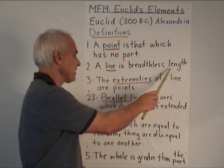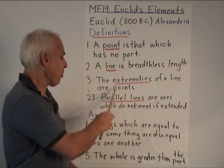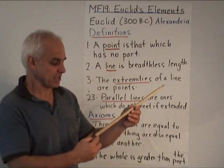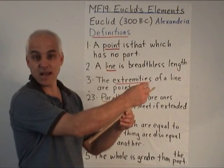A line is breadthless length. The extremities of a line are points. That means he wants to consider a line as being what we would call a line segment, with a beginning and an end.